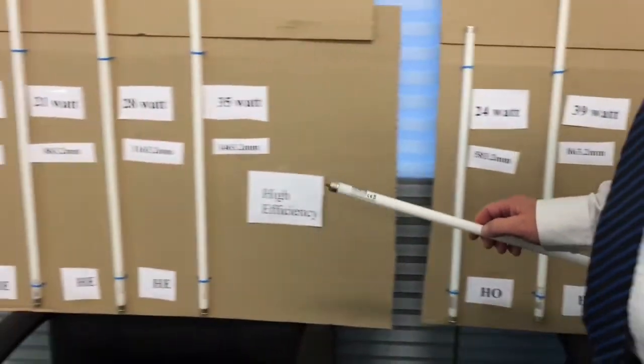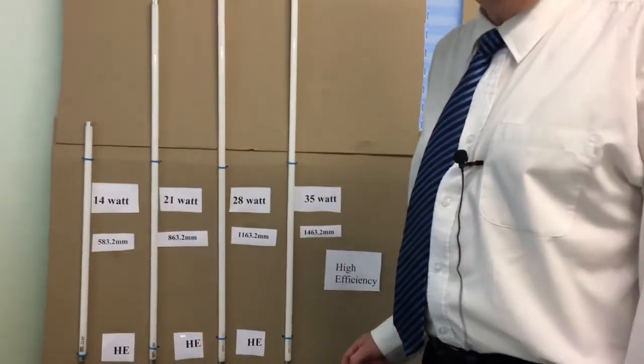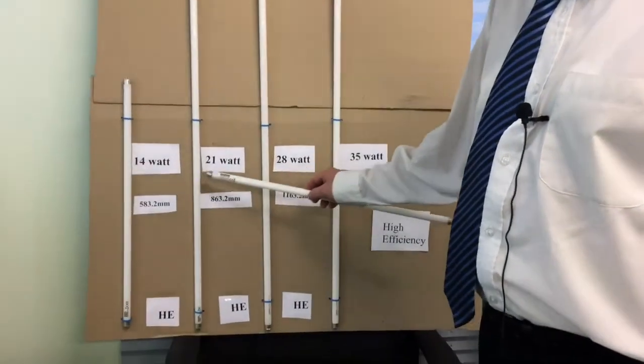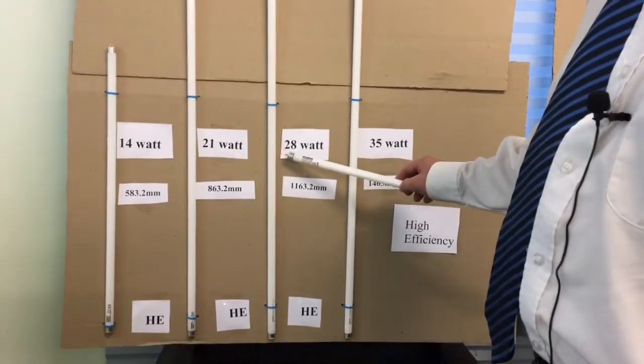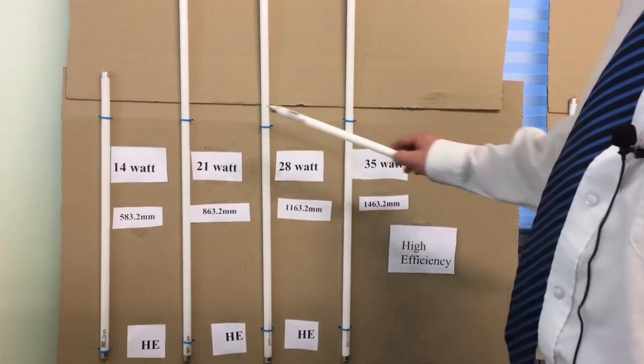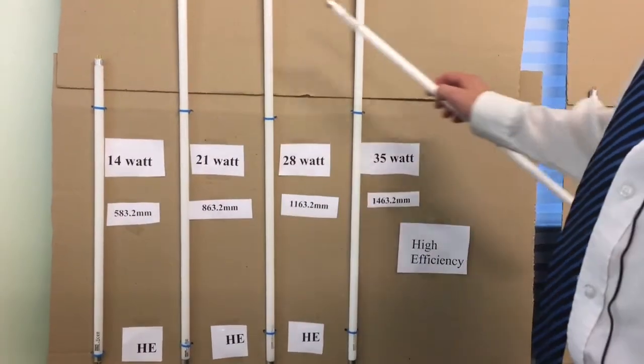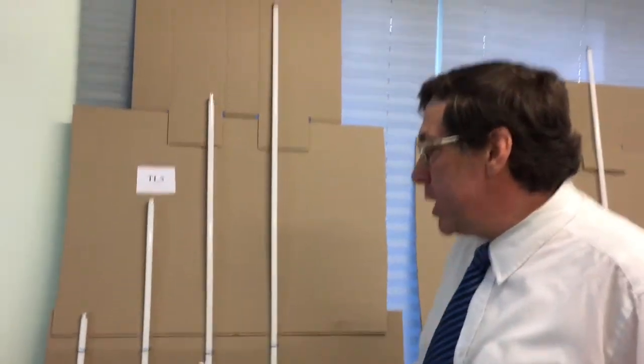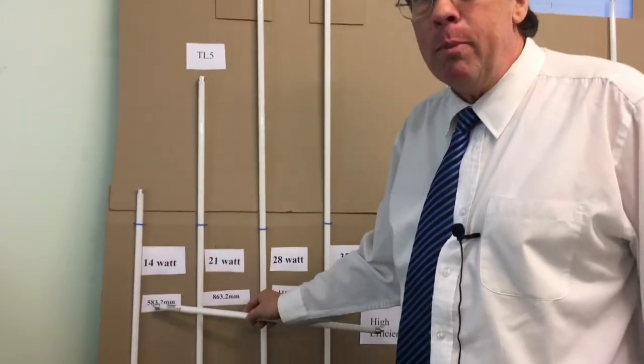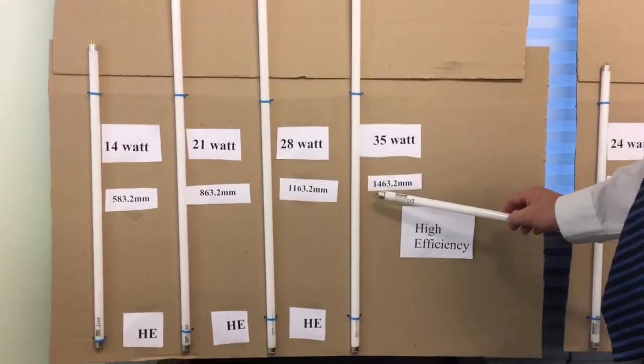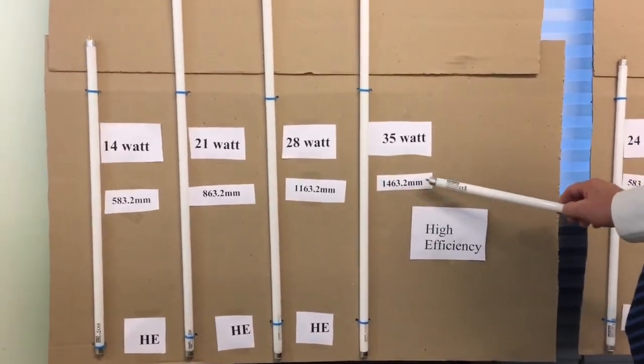With the high efficiency model, it comes in four wattage types starting off at 14 watt, 21 watt, 28 watt, and 35 watt. The lower wattage is the shorter and the higher wattage is the longest one. They start off at 583.2 millimeters and they go up to 1463.2 millimeters.